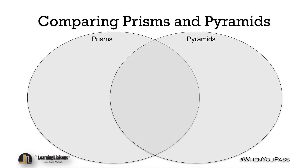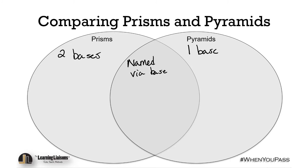Let's compare prisms and pyramids. Prisms have two bases and a pyramid only has one base. What's similar is that their bases name the object — named via the base. If the base of a prism is a rectangle, it's a rectangular prism; if it's an octagon, it's an octagonal prism. Same with pyramids: a square base gives a square pyramid, a pentagon gives a pentagonal pyramid. Also, prisms have rectangular lateral faces, and pyramids have triangular lateral faces. They're both three-dimensional objects.